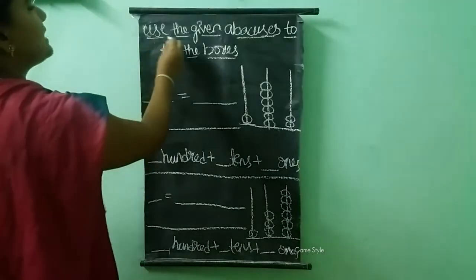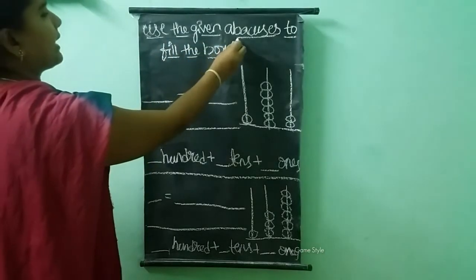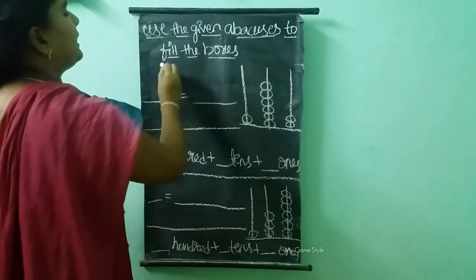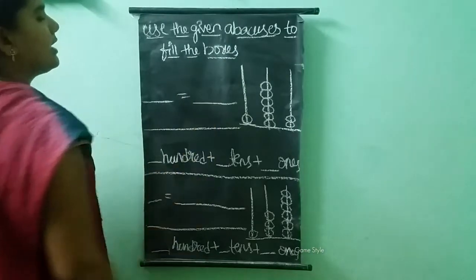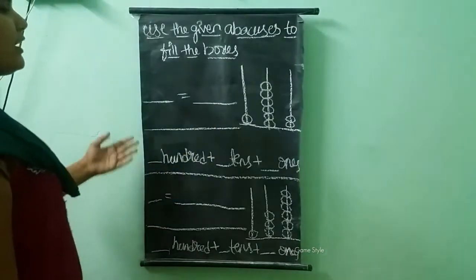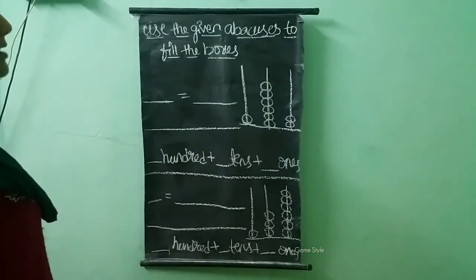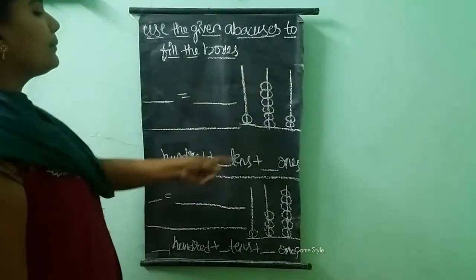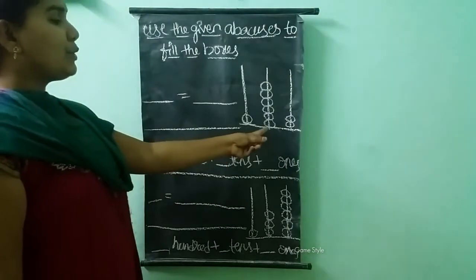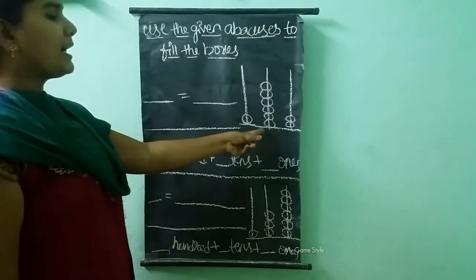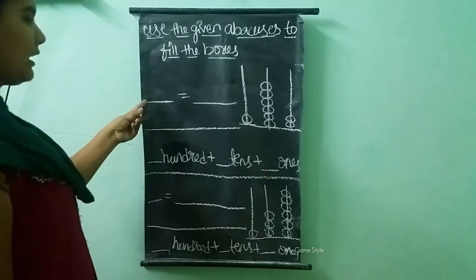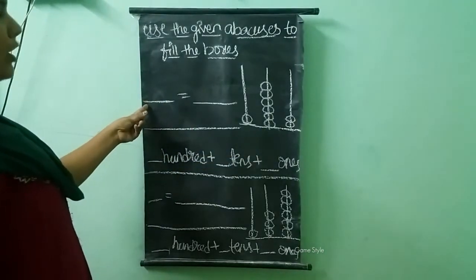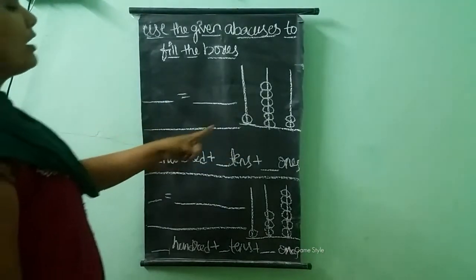Use the given abacus to fill the boxes. Here we are given two examples, so we need to write them. Let's start. By using this abacus, we need to write the numbers in the boxes here.